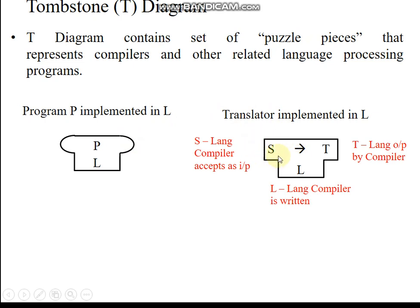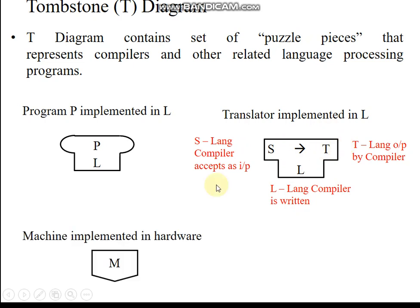Another T symbol is used to represent a translator, that is, a compiler. The compiler is written in some programming language L. For example, L is Visual C++. It handles the C programming language — this is a C compiler written in VC++ that converts C into machine-level object code. Here S is the source language (C), L is the implementation language (VC++), T is the target (machine code), and M represents the machine hardware architecture that supports language M.